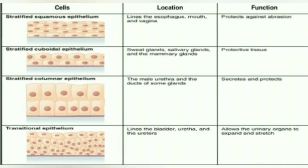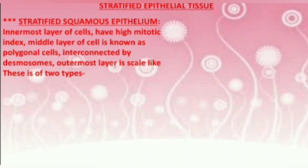Stratified epithelial tissue is of mainly four types: squamous epithelium, cuboidal epithelium, columnar epithelium, and transitional epithelium. The first type is the stratified squamous epithelial tissue. The innermost layer of cells has a high mitotic index. The middle layer of cells is known as polygonal cells and are interconnected by desmosomes.